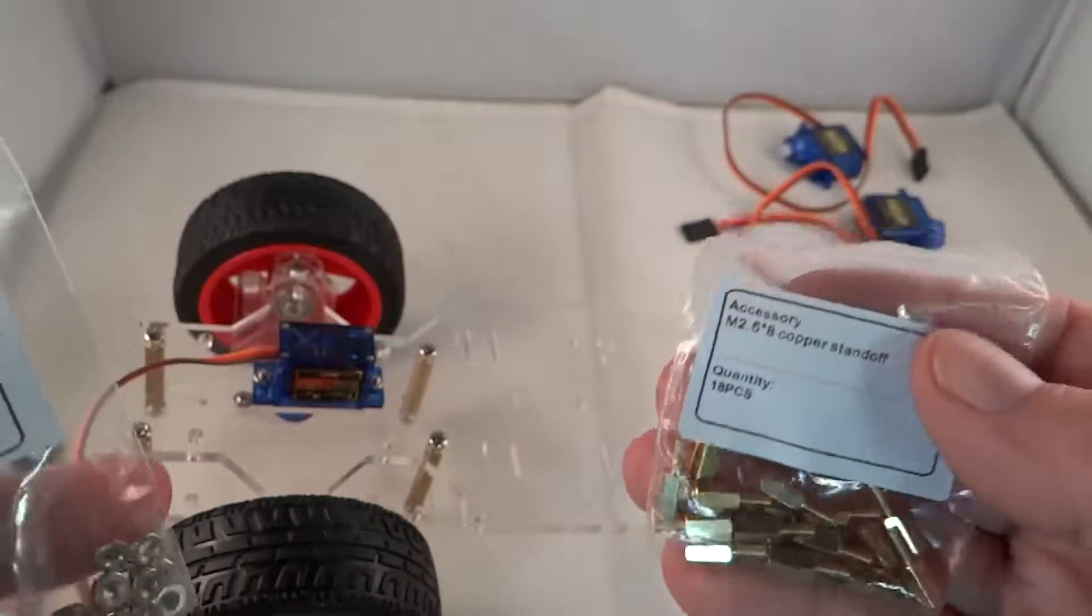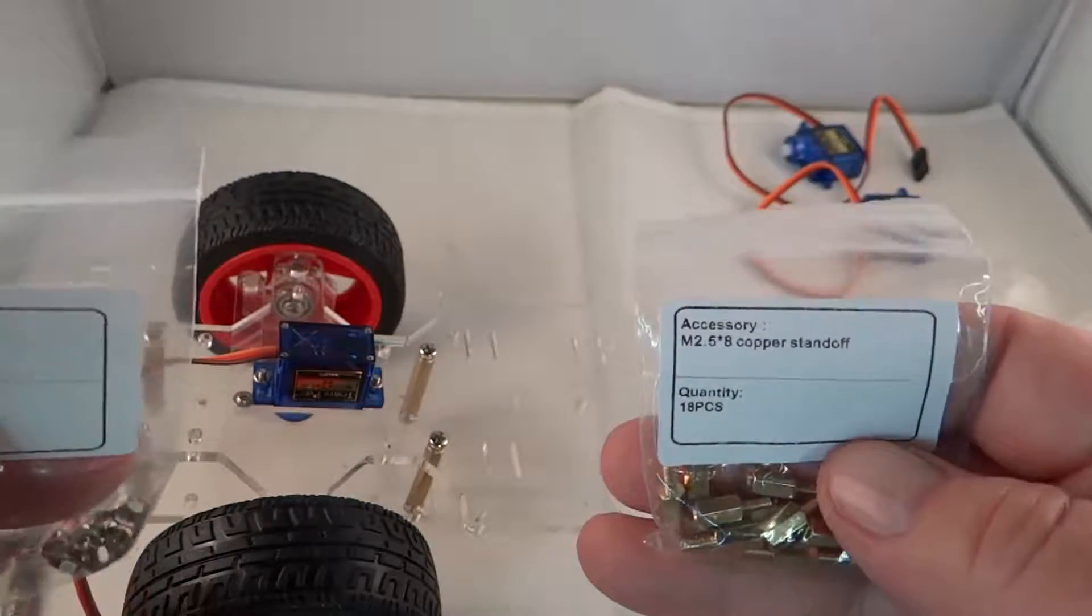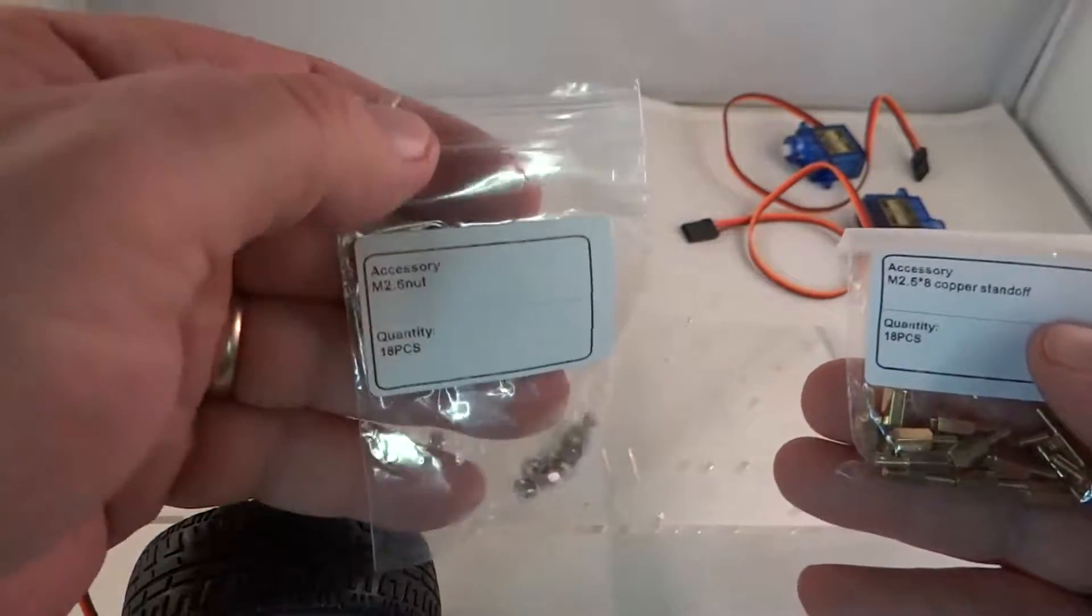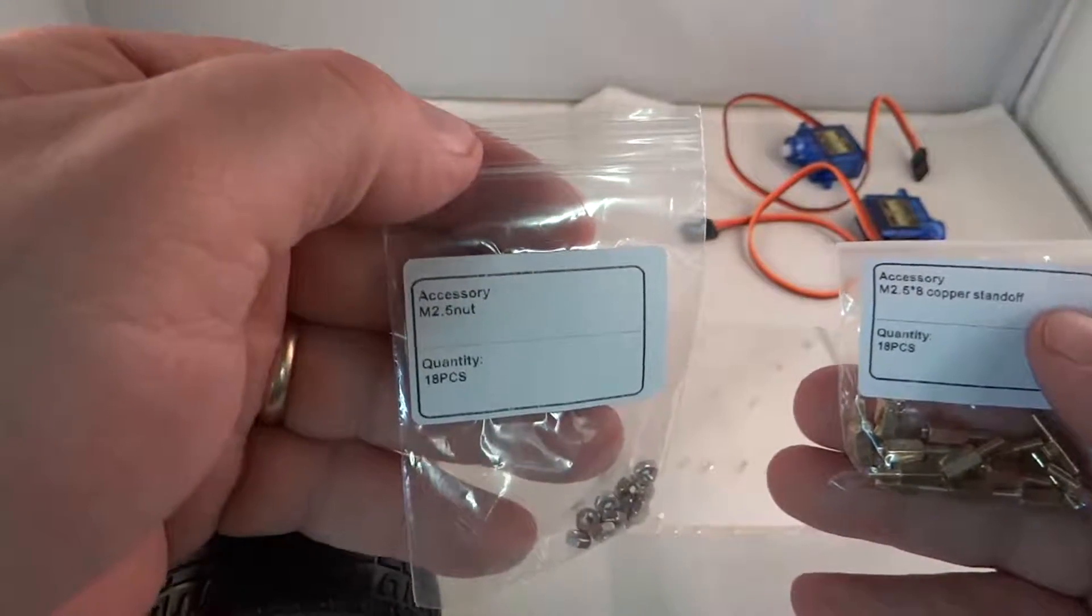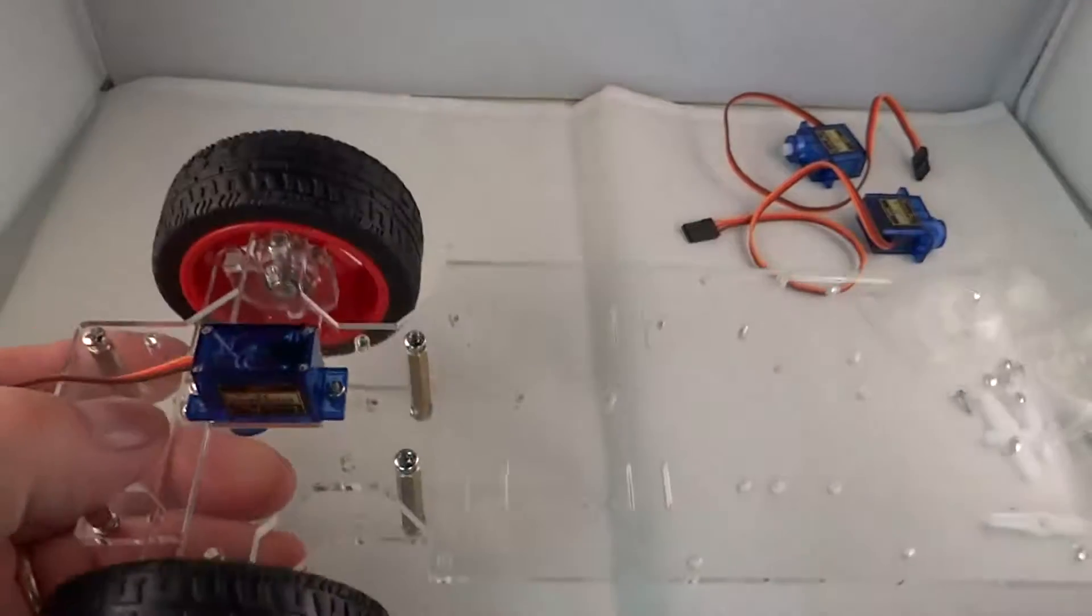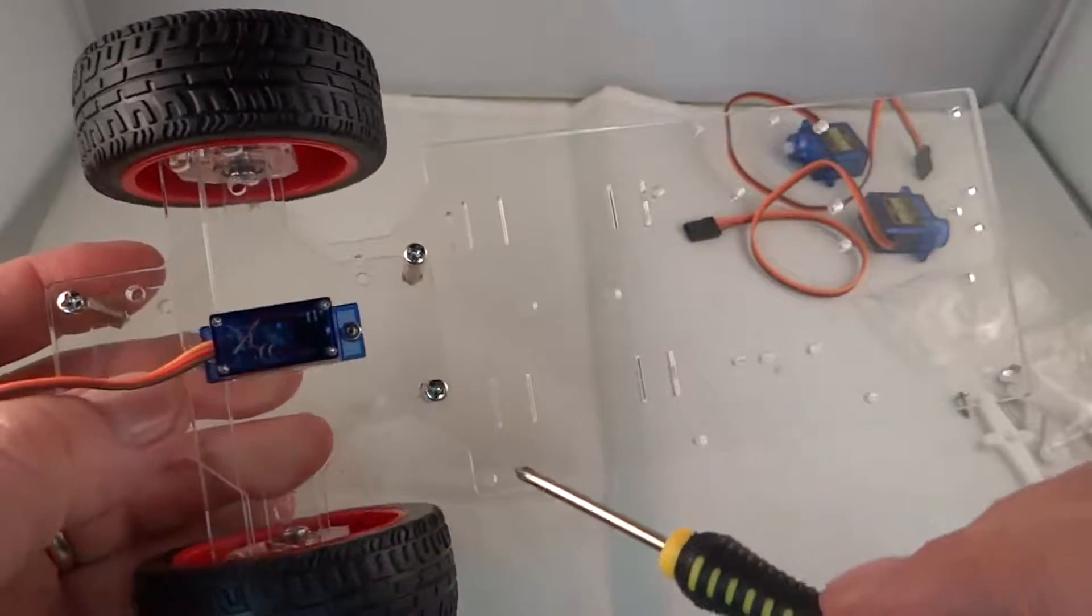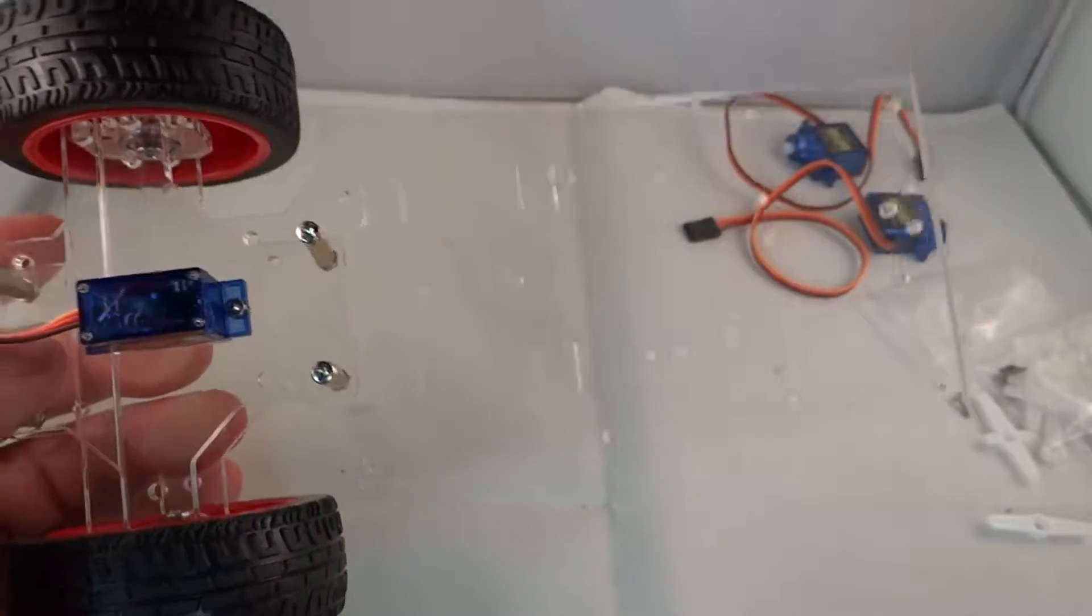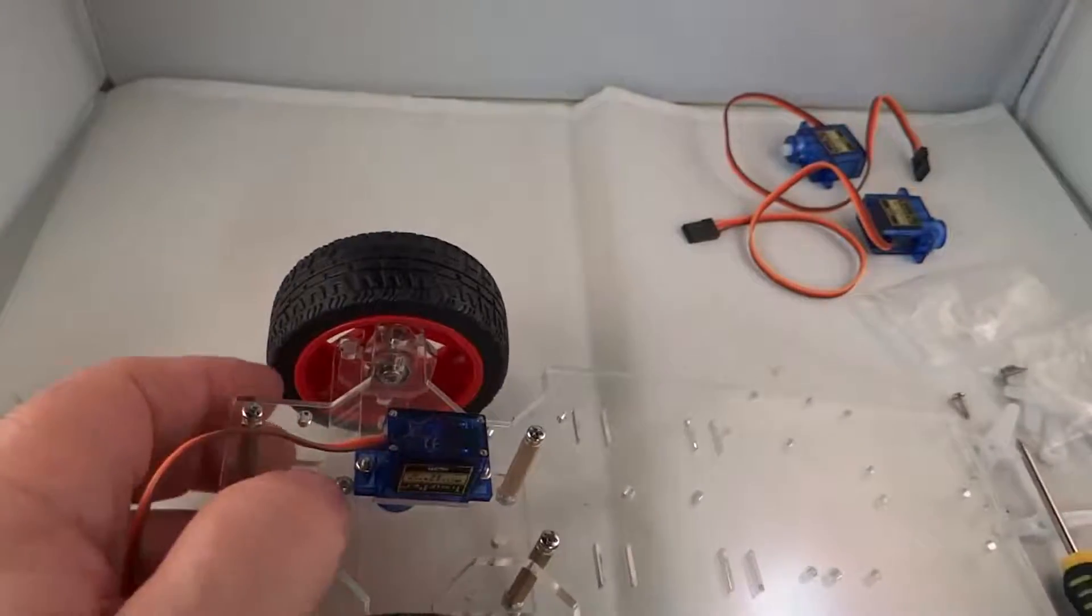We're going to need 16 pieces of the M2.5 starry copper standoff and 16 of the M2.5 nuts. If you look at this thing here, you'll see all these smaller holes. There are 16 of them, so we're just going to install those.